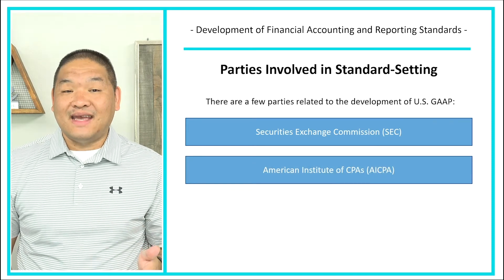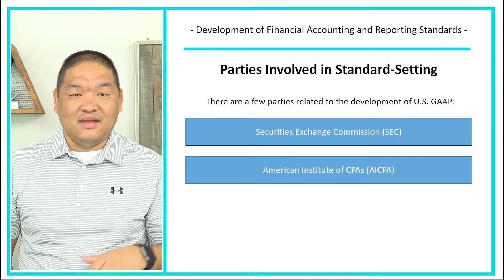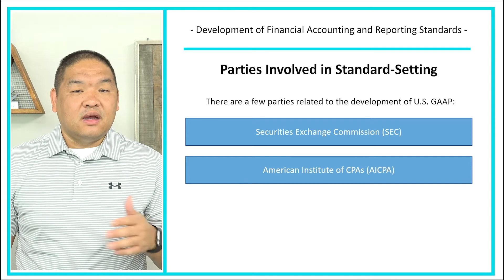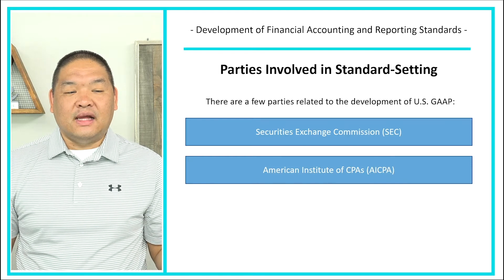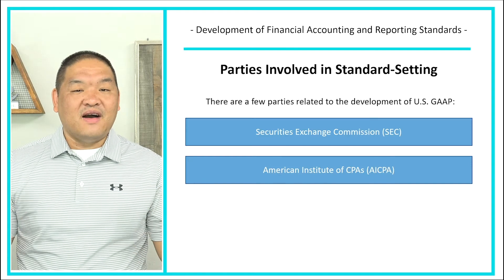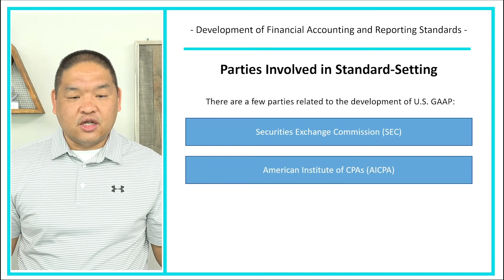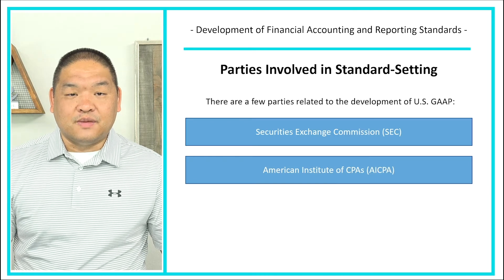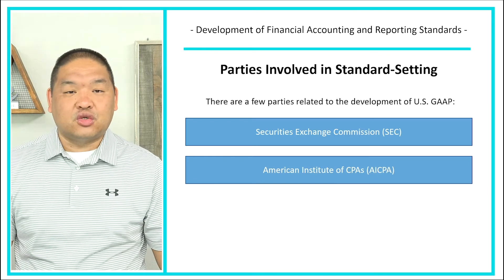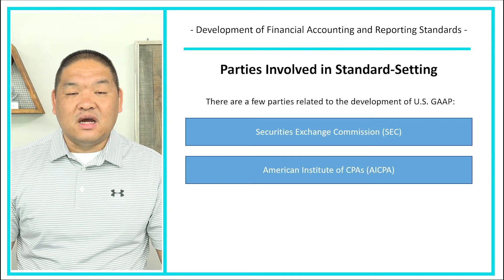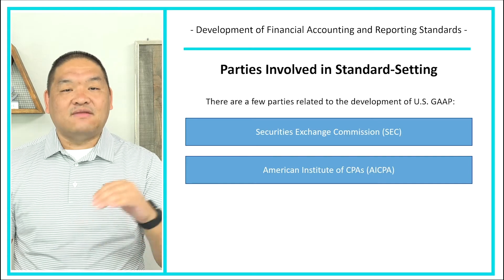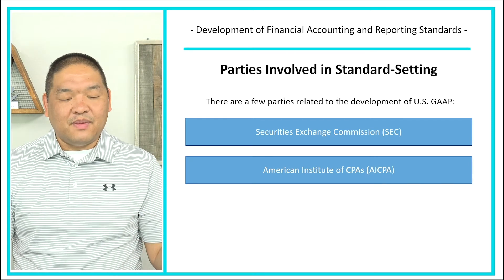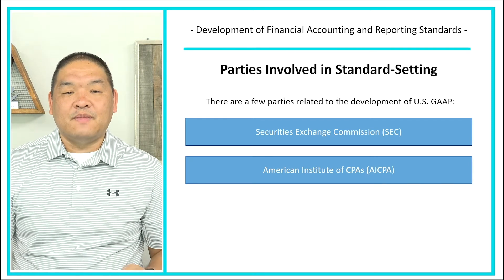For private companies, that responsibility is taken on by the AICPA — the American Institute of Certified Public Accountants. The AICPA is a professional organization made up of CPAs whose charge is to advance the profession. They are one of the largest professional member organizations in the world, and they have technical teams that establish GAAP rules for private companies.